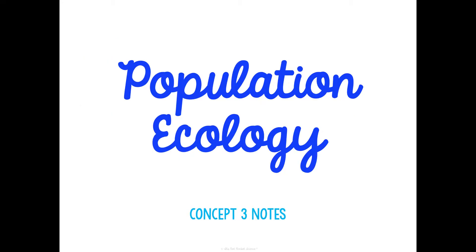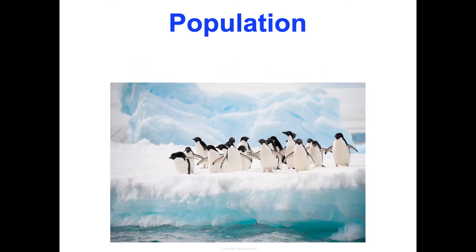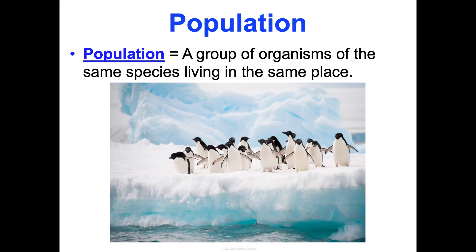Good morning. Welcome to Unit 7 Ecology Concept 3 Notes. We are going to be talking about a branch of ecology called Population Ecology, which specifically looks at the relationships between organisms and their environment on a population level. A population is just a group of organisms of the same species living in the same place — so we'd look at all the penguins in one area and how they interact with each other, with other species, and with their environment.